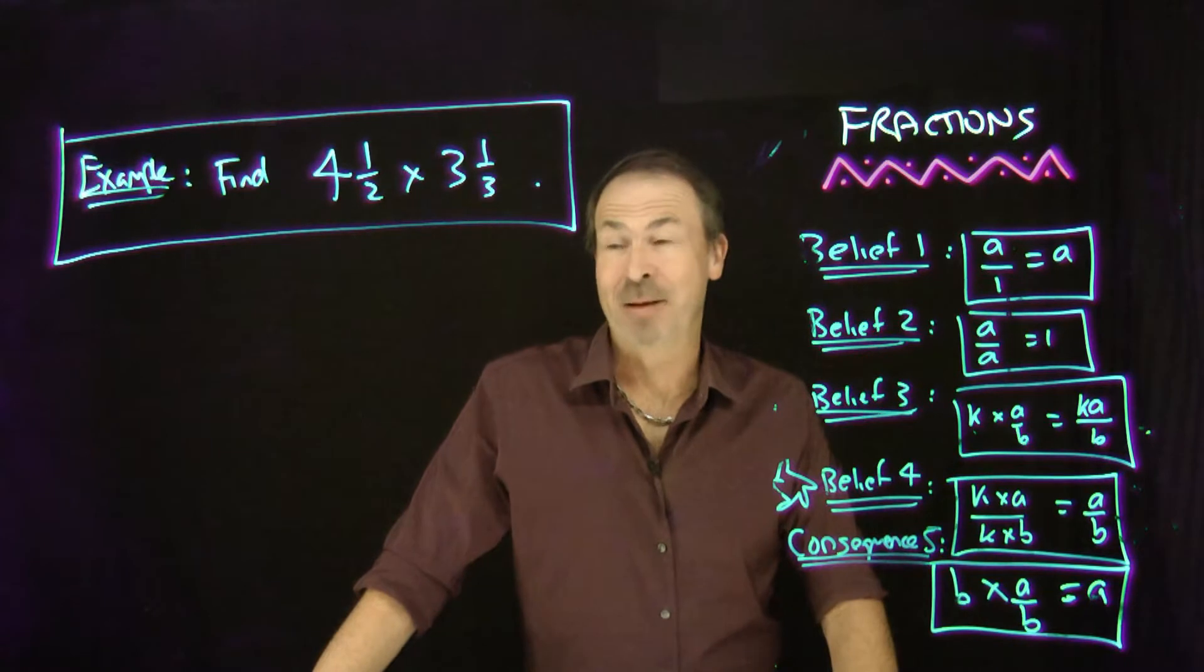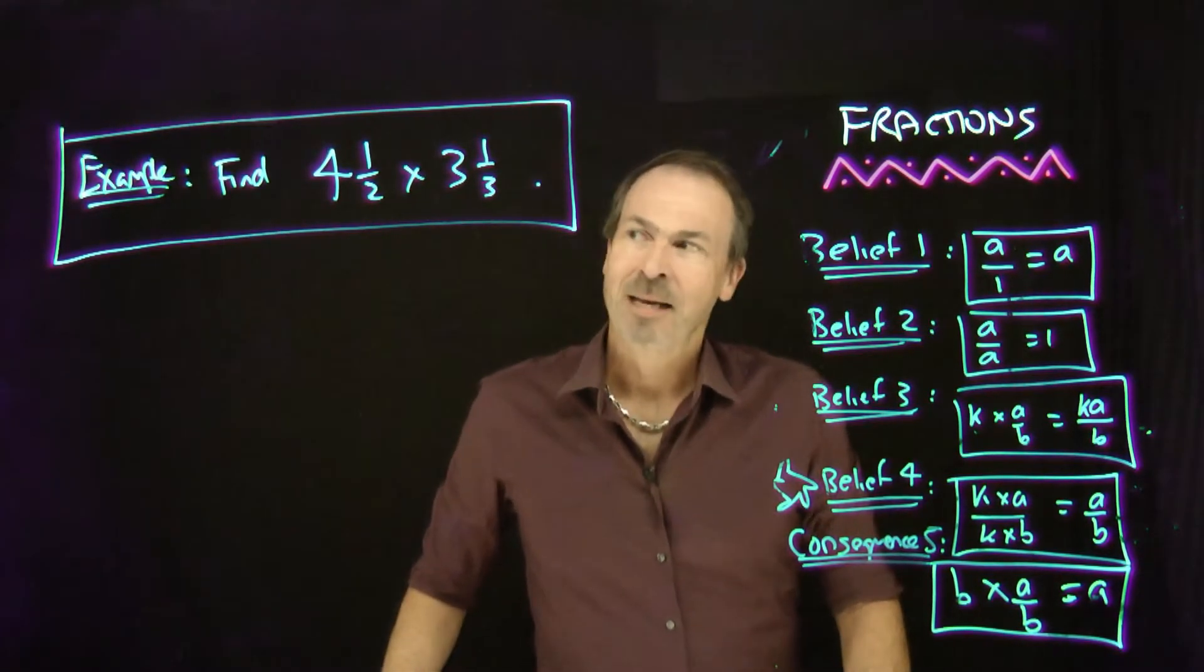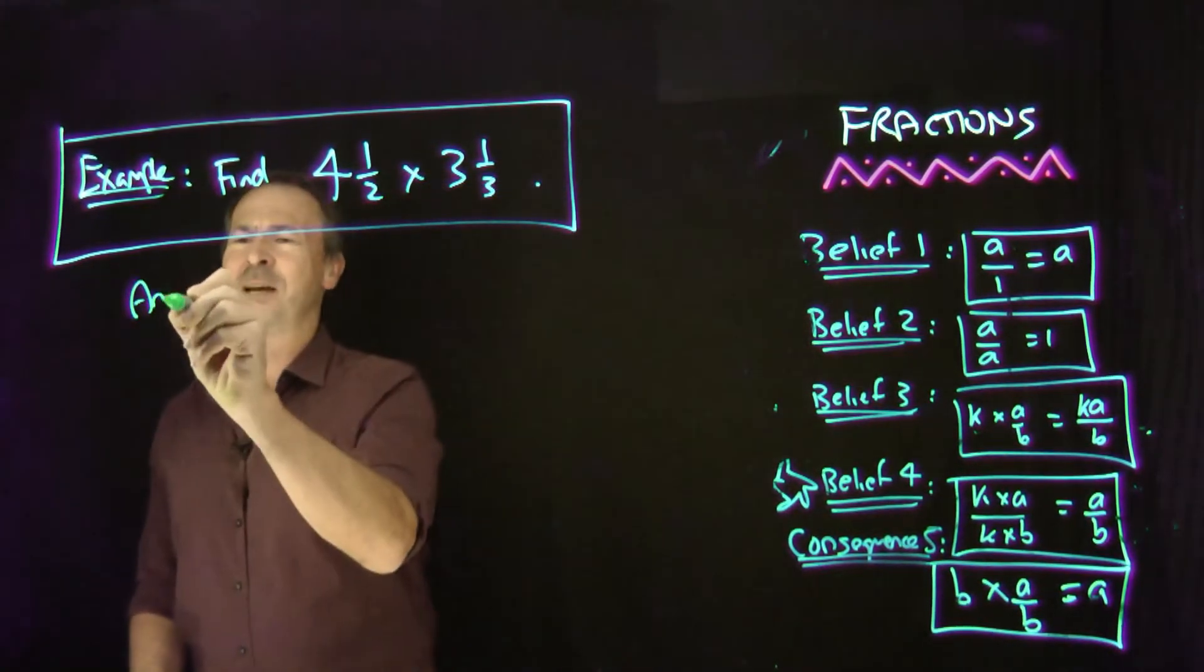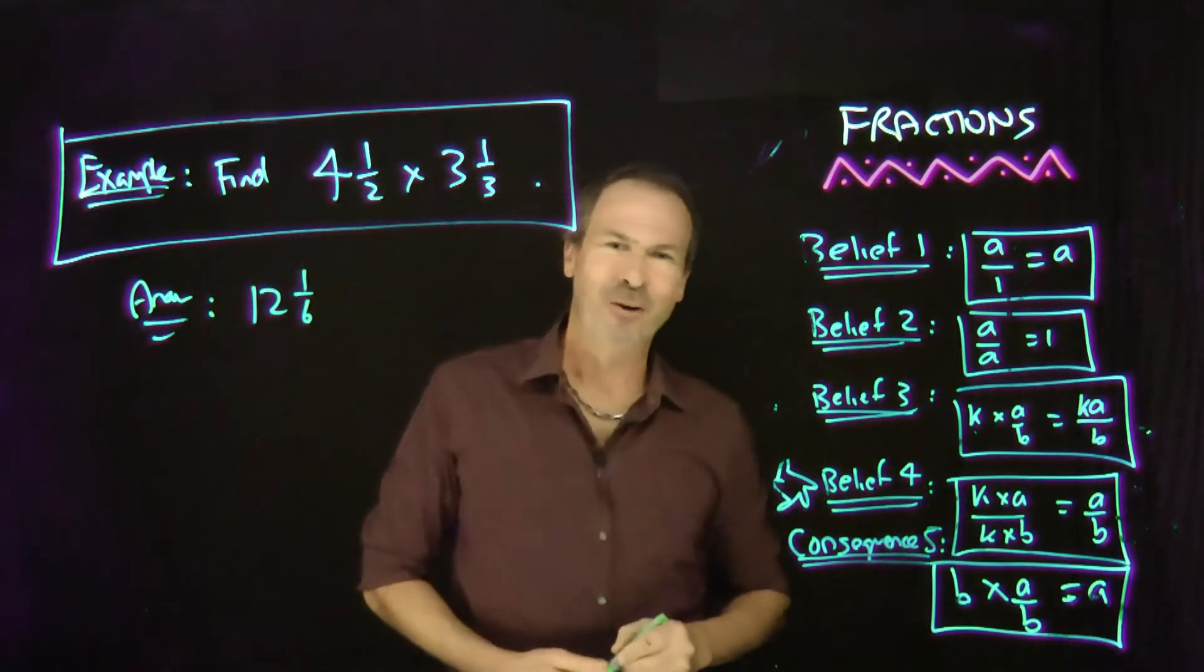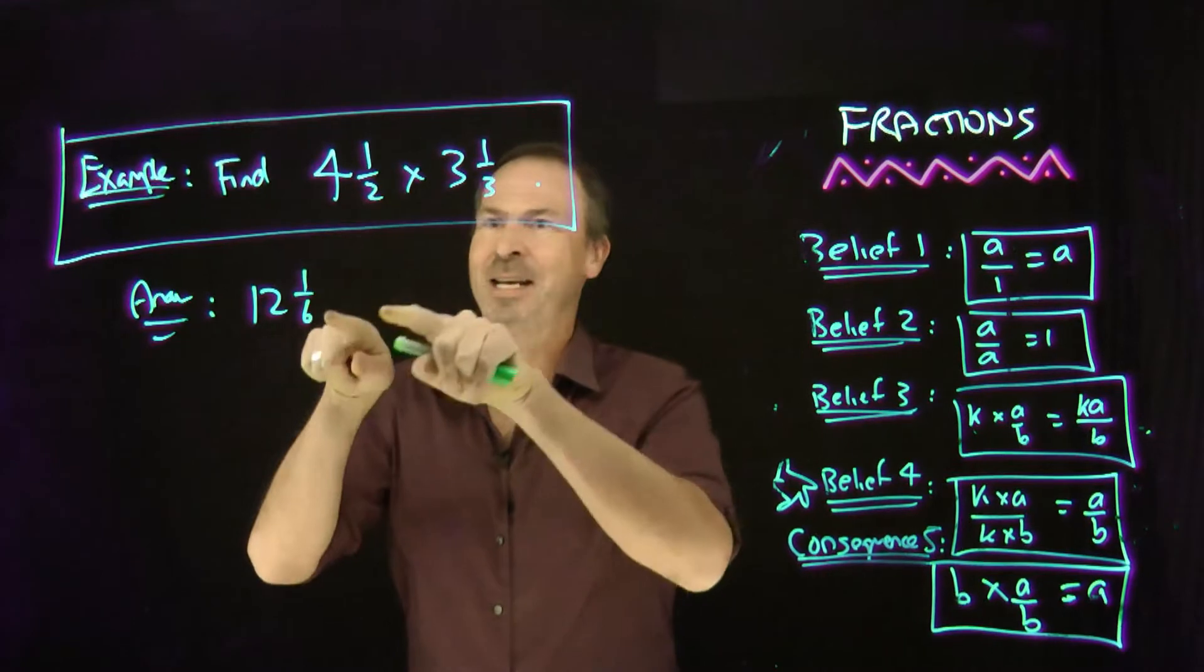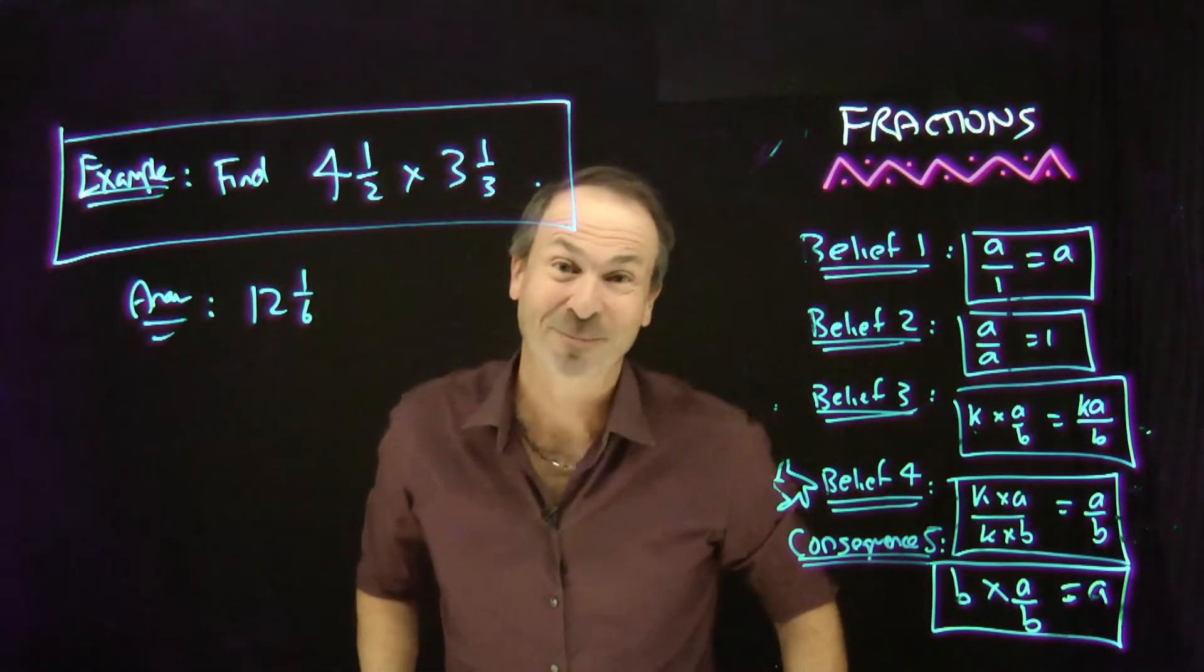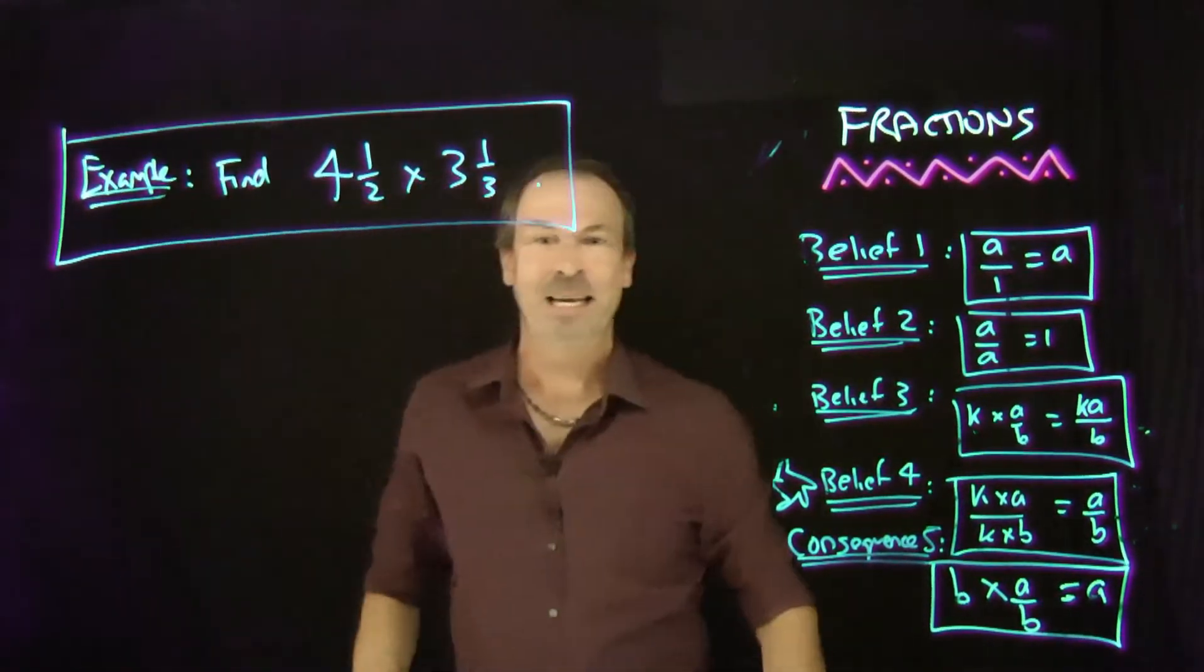Let's now multiply two mixed numbers. Please find the product of 4 and a half and 3 and a third. Now when students first see these sorts of things, it's very, very tempting to write, oh, the answer must be 12 and a sixth. See where that's coming from? I mean, it seems very natural to go 4 times 3 is 12. A half times a third is going to be a sixth. Done. 12 and 1 sixth. Turns out that's not correct. Because we're missing stuff. And the way to see the stuff you're missing is, okay.